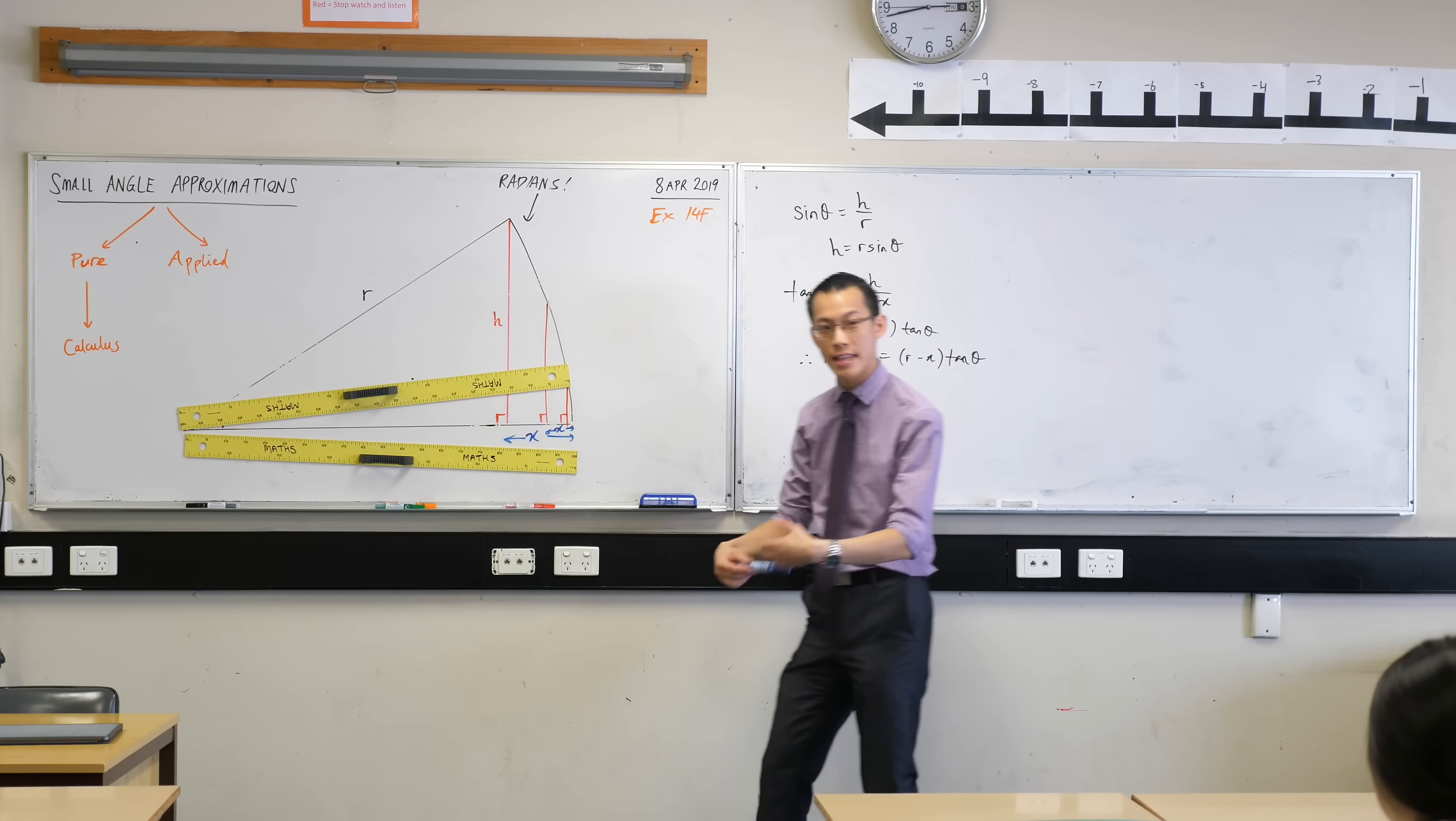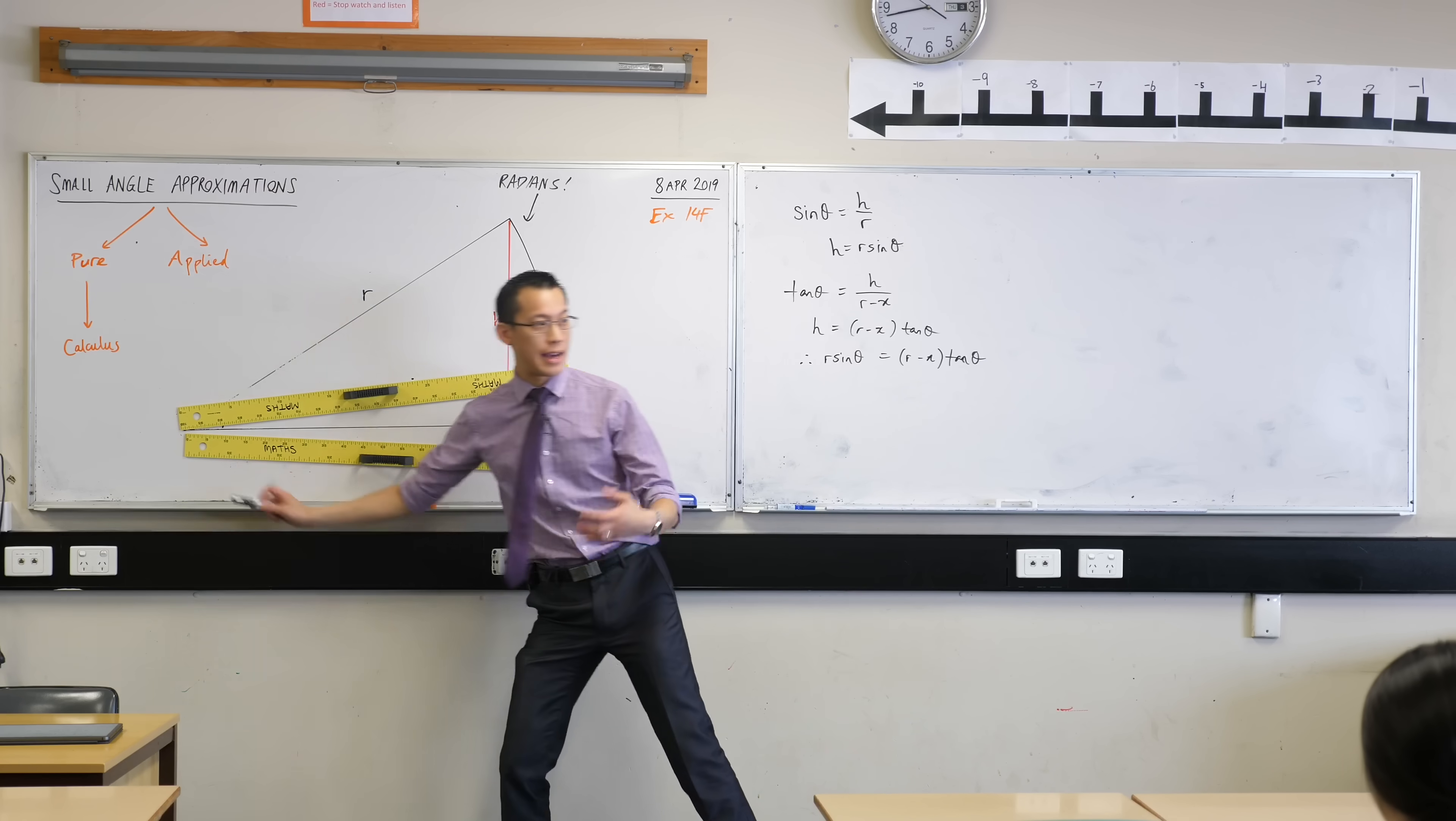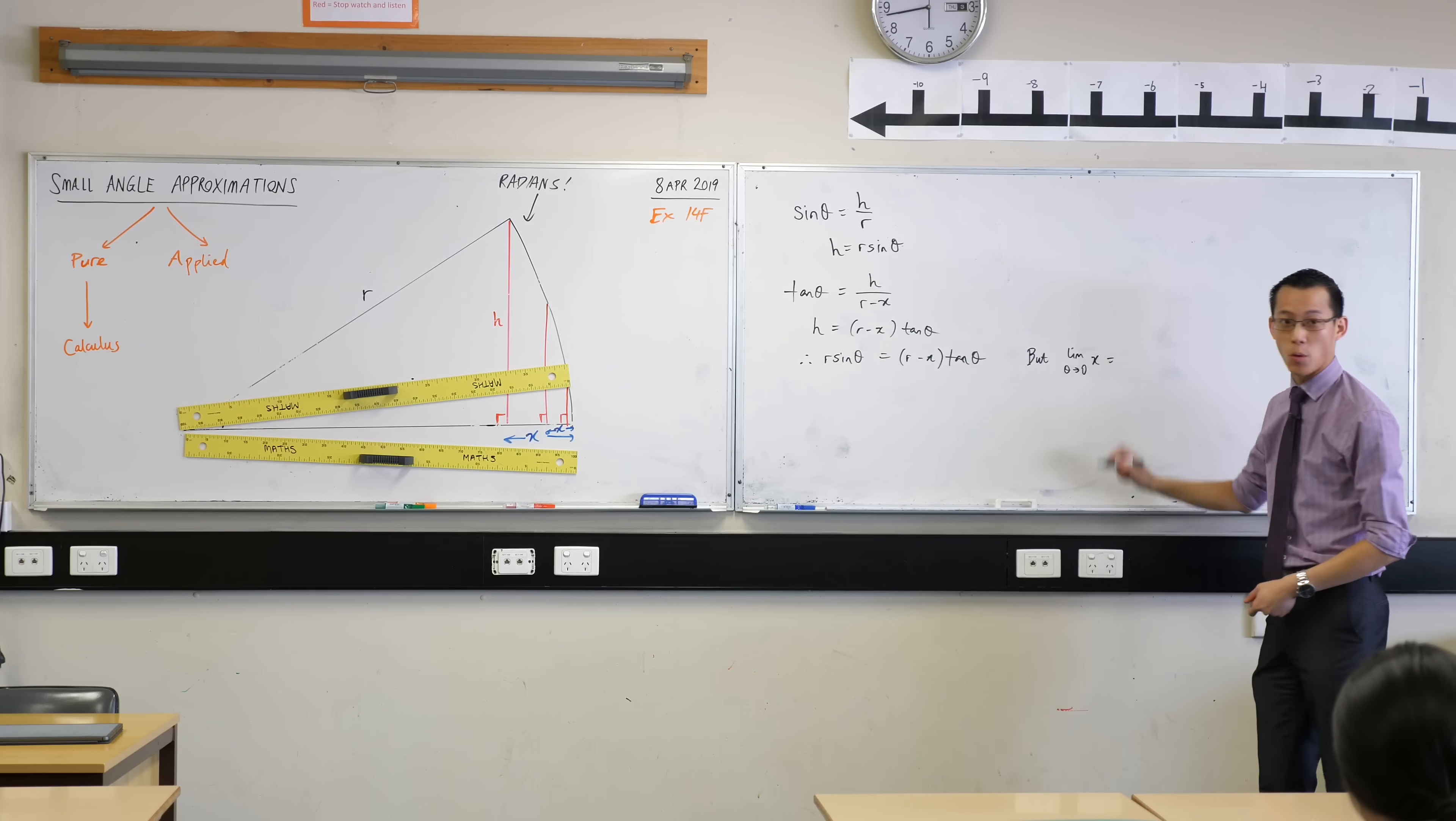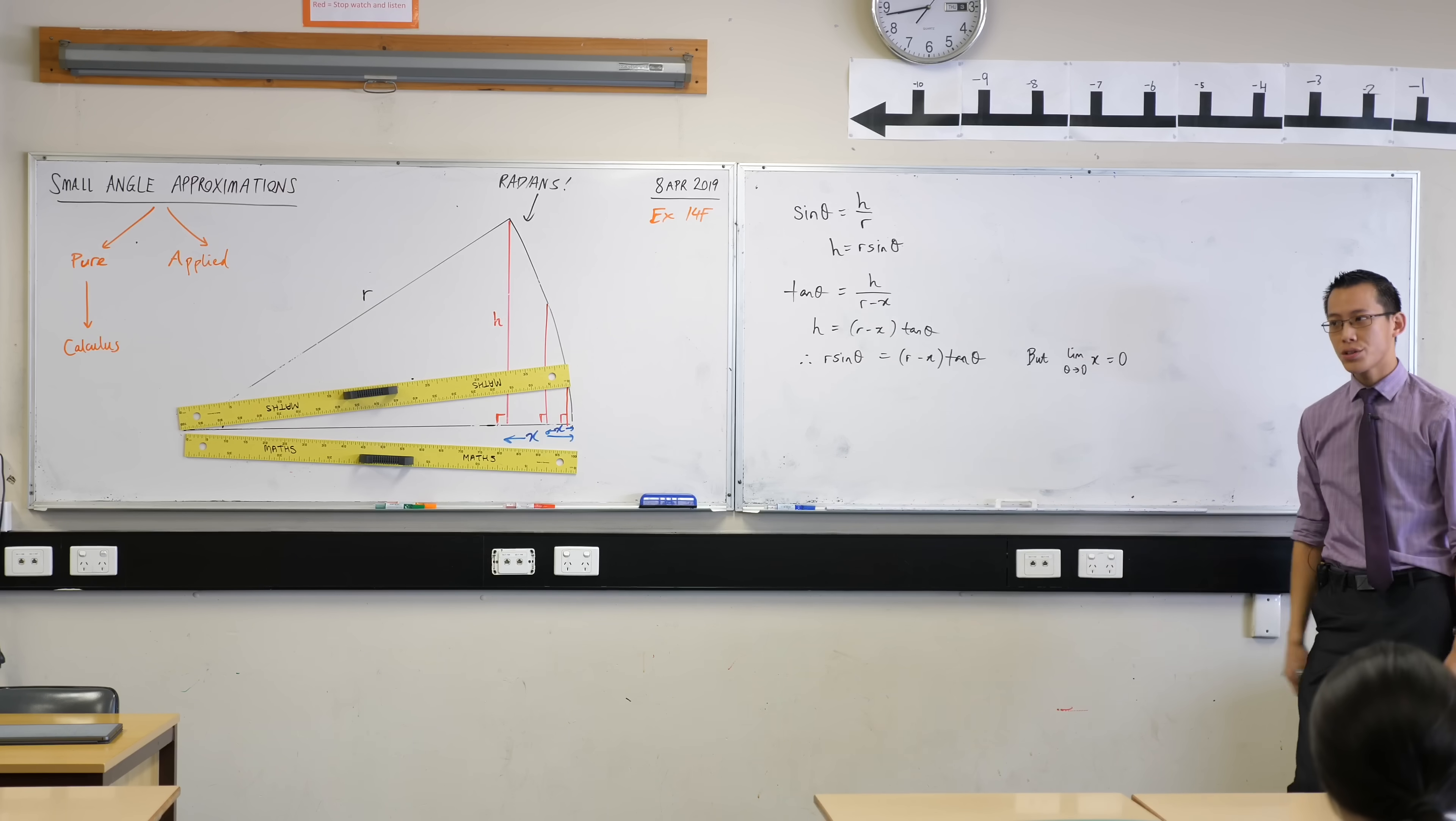As theta disappears, as theta approaches zero, so does X. So I have a way of stating this. I can say, using my language of limits, the limit as theta approaches zero of that length, X, what is that limit? What's it approaching? What did we just establish? Also approaching zero. So therefore, if I think about this in the context of this statement that we just made over here about H, we've forgotten that it was about H. We don't need to know that that's where it came from, but that's where we learned this, just simple right-angled triangle trig.